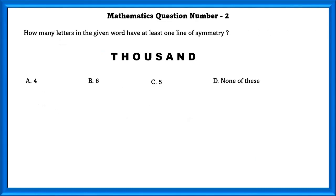Mathematics question number 2. How many letters in the given word have at least one line of symmetry? Since they have said at least one line of symmetry, there has to be one line or more than one line of symmetry. O has infinite lines of symmetry. Six of the letters have at least one line of symmetry. So the answer is 6.